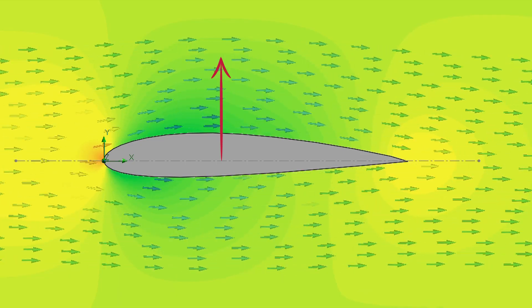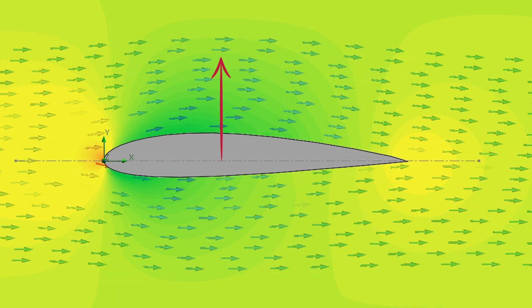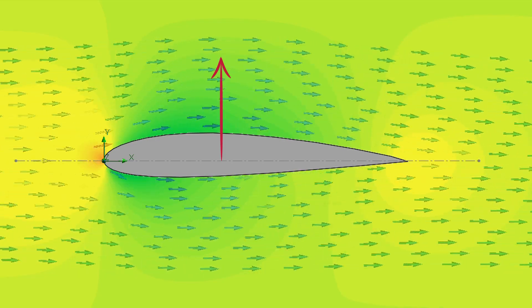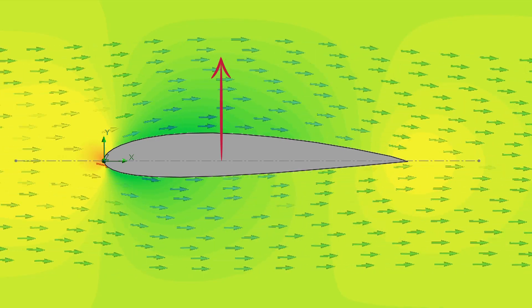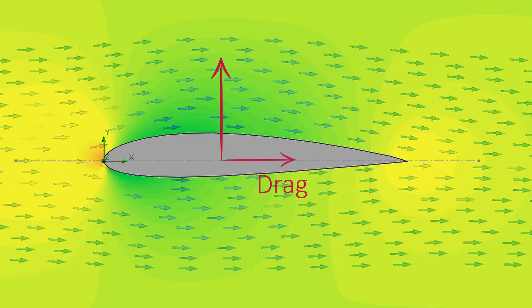Similarly, near the left part of the airfoil, the pressure is higher than in the right part, so it results in a horizontal force called drag.